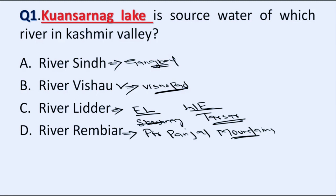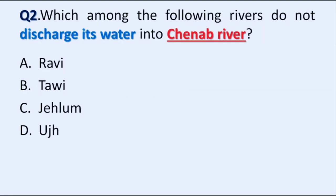Our next question is: which among the following rivers does not discharge its waters into Chenab River? Option A: Ravi, B: Tavi, C: Jalim, D: Aj. Correct answer is Option D, River Aj. River Aj drains its water into River Ravi.